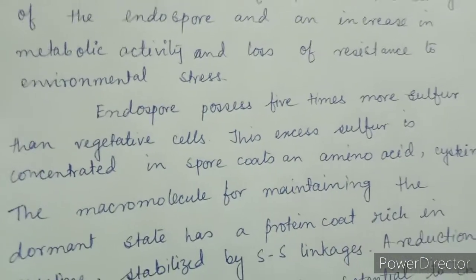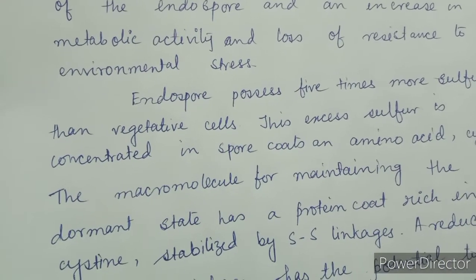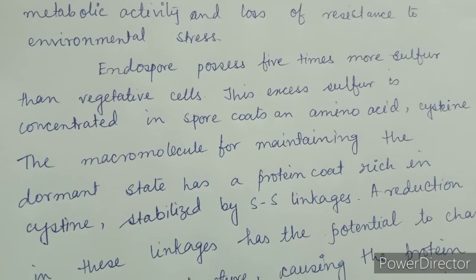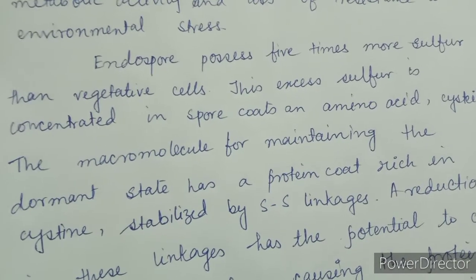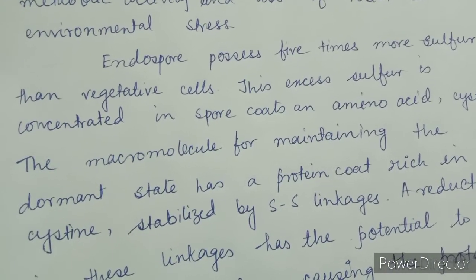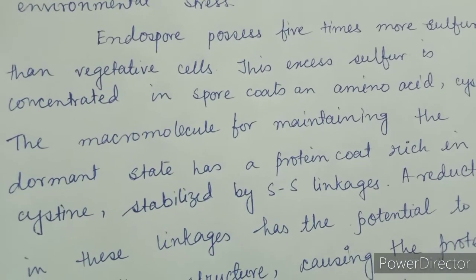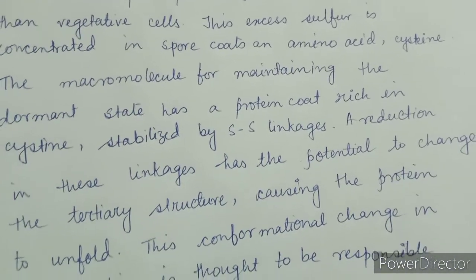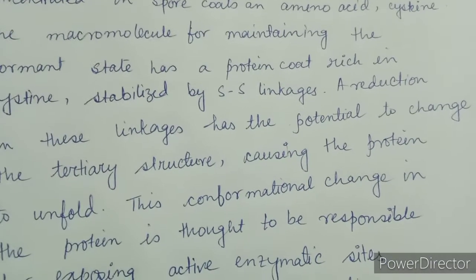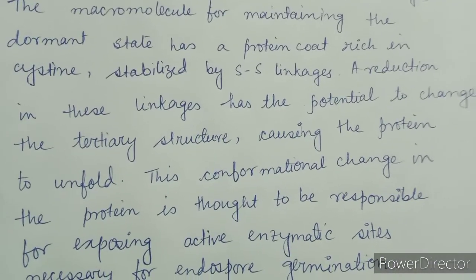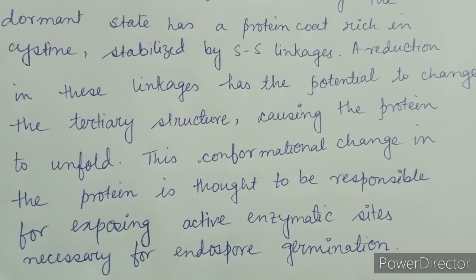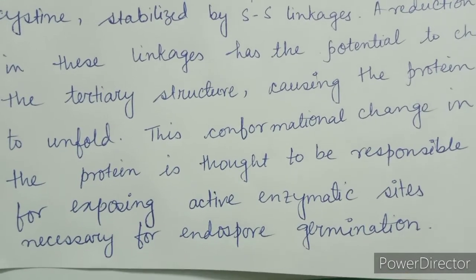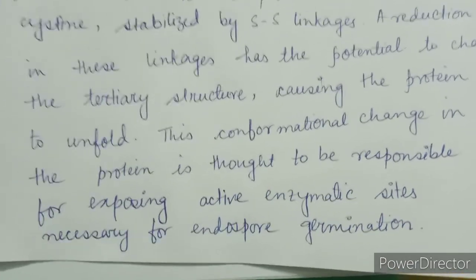Endospores possess 5 times more sulphur than vegetative cells. This excess sulphur is concentrated in spore coats and the amino acid cysteine, which helps in the supply of sulphur to the spore coat. The macromolecule for maintaining the dormant state has a protein coat rich in cysteine stabilized by sulphur-sulphur linkages. A reduction in these linkages has the potential to change the tertiary structure, causing the protein to unfold. This conformational change is thought to be responsible for exposing active enzymatic sites necessary for endospore germination.